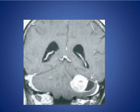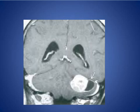Here, coronal MRI T1-weighted images show a cystic mass with an enhancing mural nodule in the left cerebellum. It looks like a hemangioblastoma, but in hemangioblastoma the wall is not enhancing. This is actually metastasis.